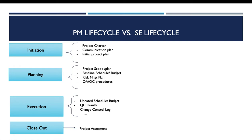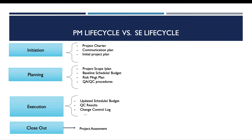At the closeout phase, we mainly deliver a project assessment report. Now for the software engineering lifecycle, this process is mainly composed of five main activities.